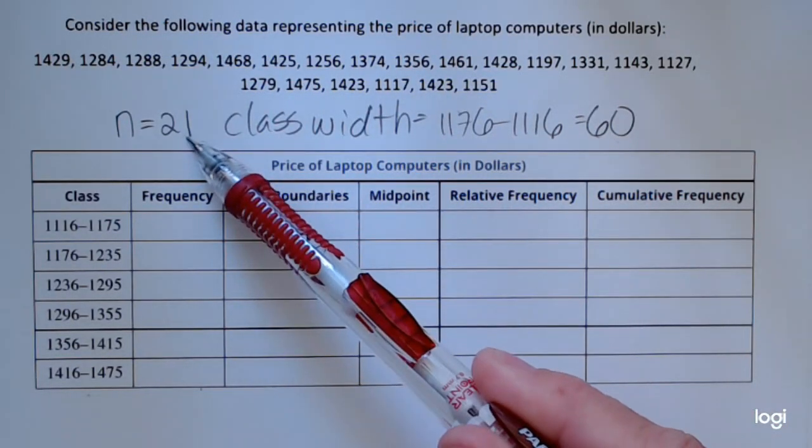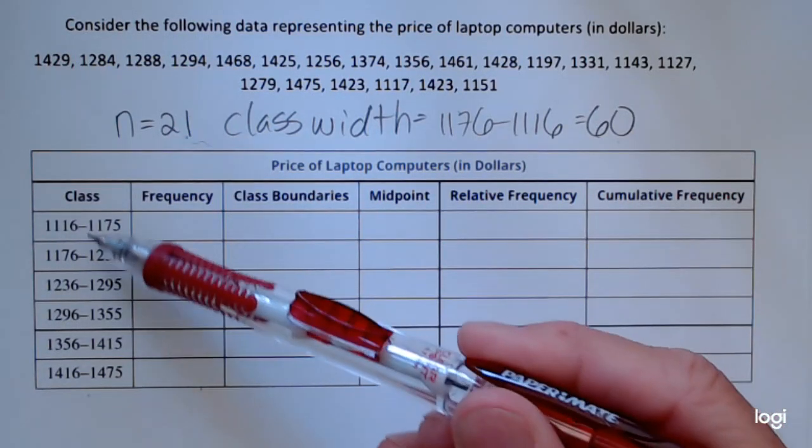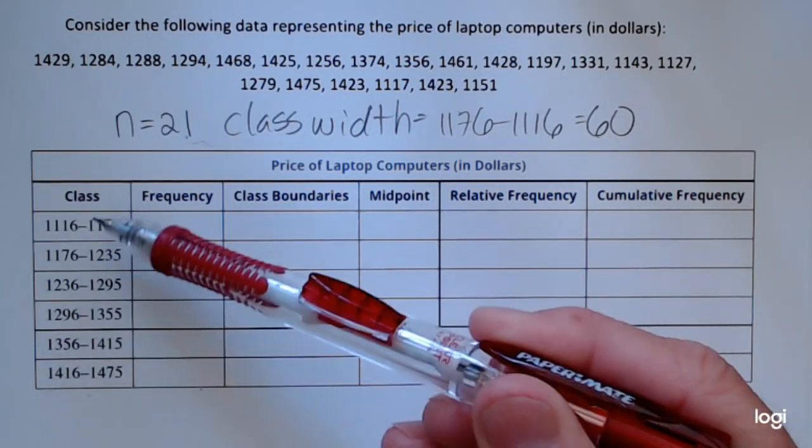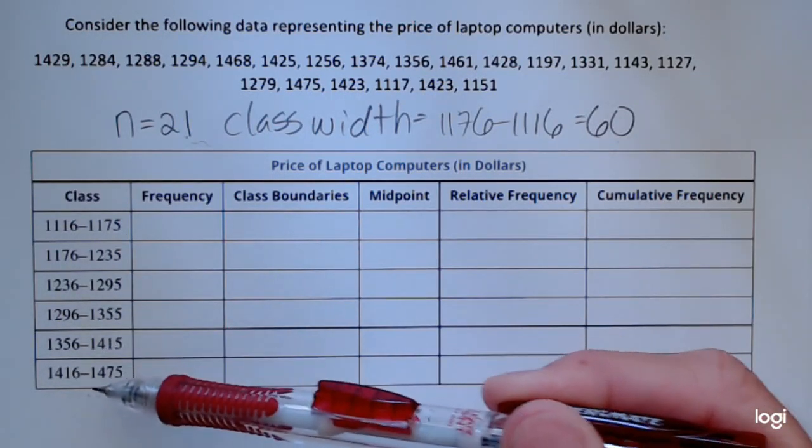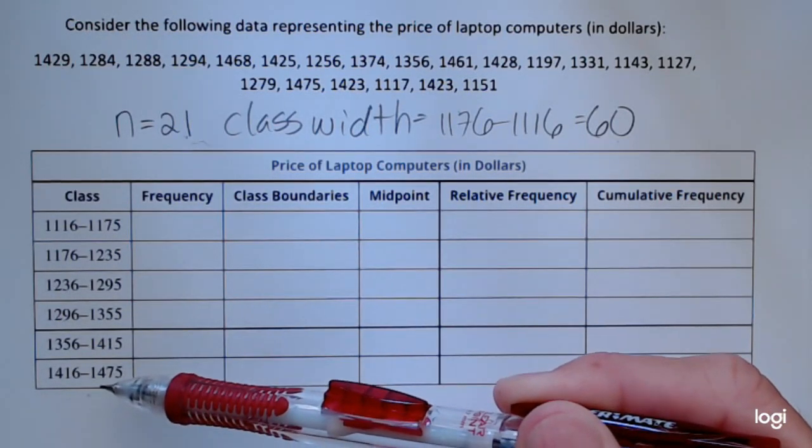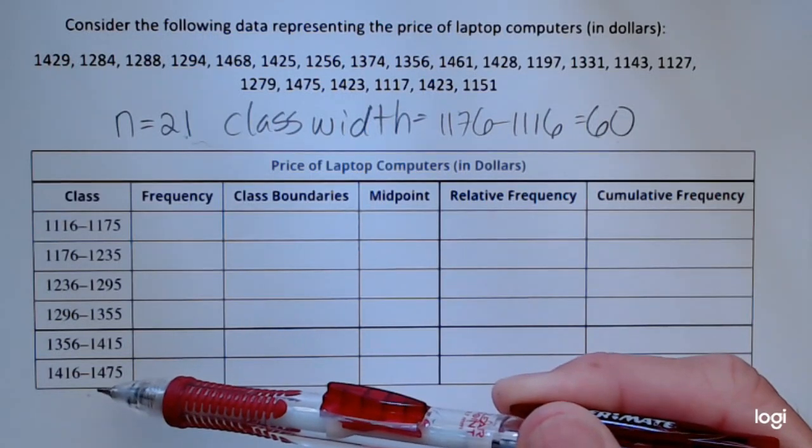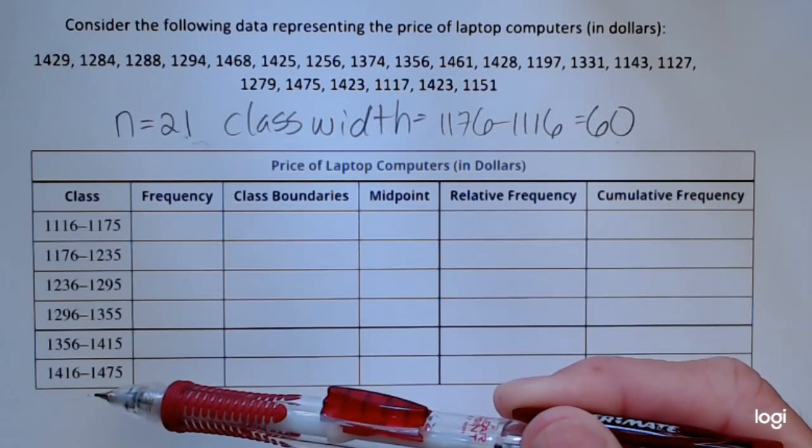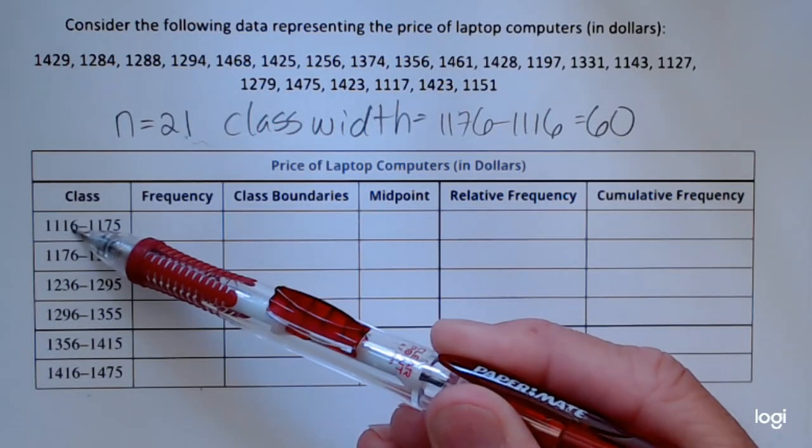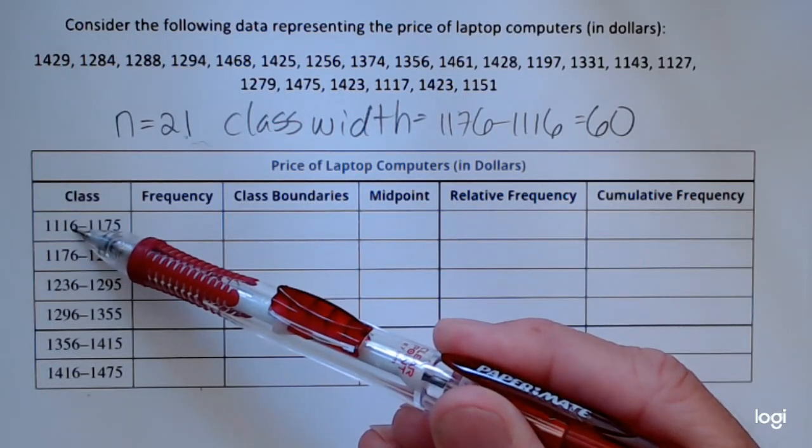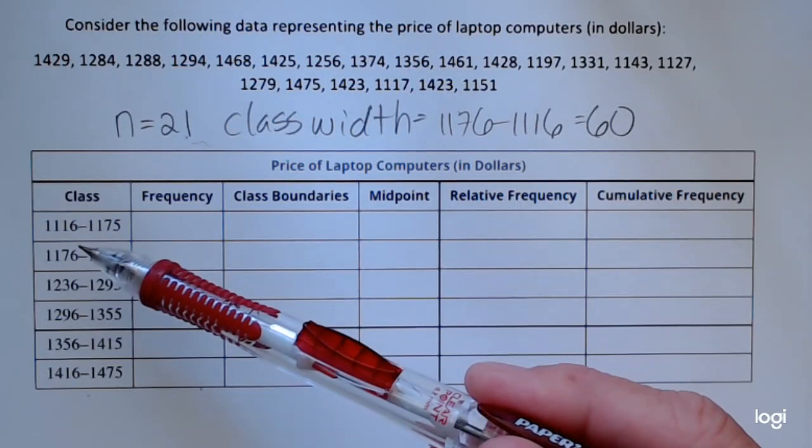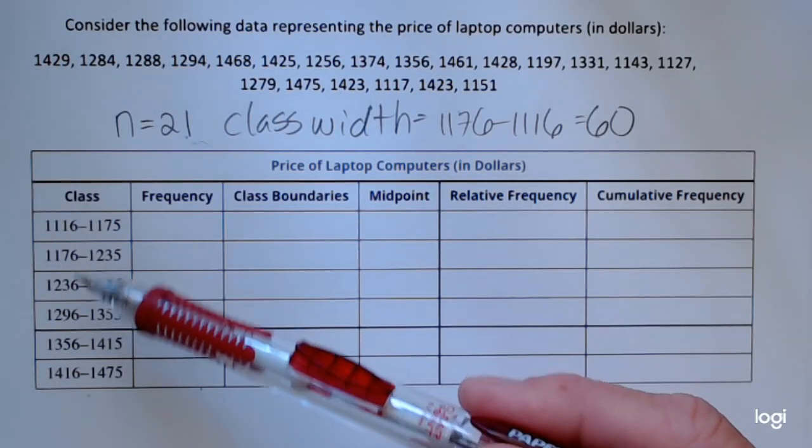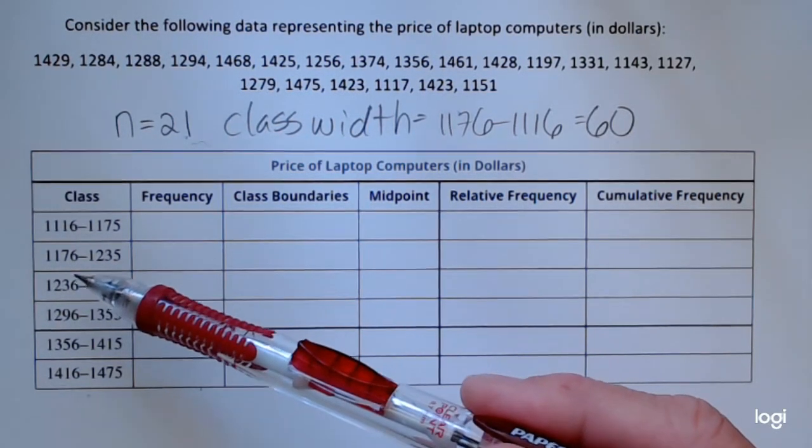In other words, I've already been given the class limits for this problem. If I were to do this problem from scratch, I would probably choose the minimum value for the first lower class limit. That's one way to do this, or you could choose a value that's slightly smaller than the lowest value of the data set.